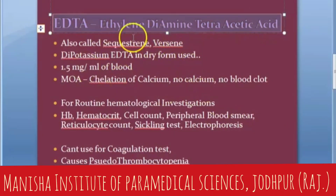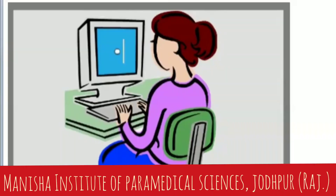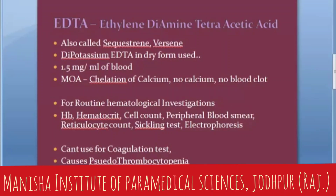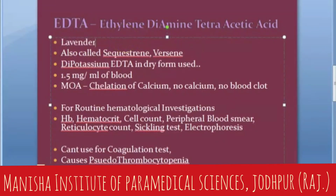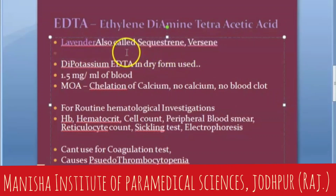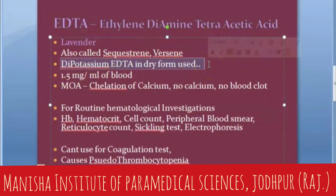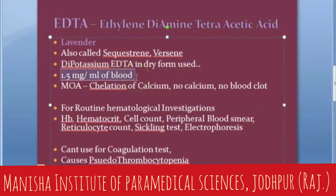Now let's learn about EDTA — that is the lavender vacutainer. EDTA stands for ethylene diamine tetra-acetic acid. It is also called sequestrin or versine. The actual salt used is dipotassium EDTA, and it is used in dry form. Dry anticoagulants are preferred because liquid ones cause dilution. The dosage is 1.5 mg per ml of blood.